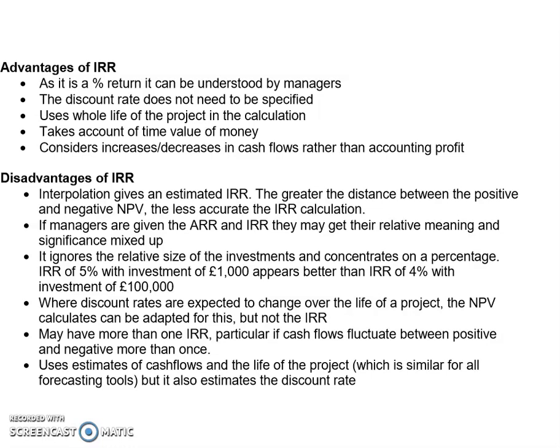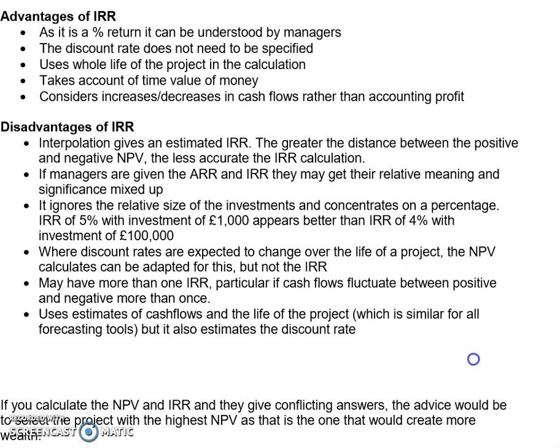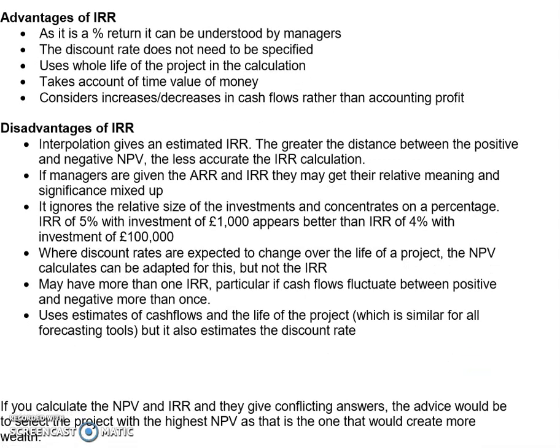As with any technique where we're looking into the future, everything we do is an estimate — all of our cash flows are an estimate. Added to that, the IRR using interpolation is also an estimate, so that adds another degree of estimation on top. If you calculate the NPV and the IRR on a particular project and get conflicting answers — one technique says go ahead and the other says don't — I would always take the NPV approach. It's just more stable than the IRR.